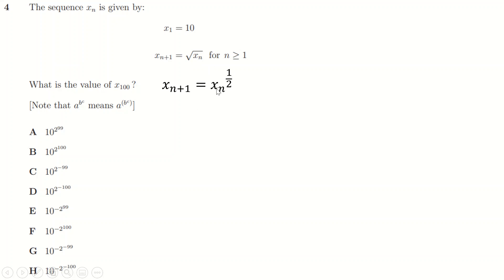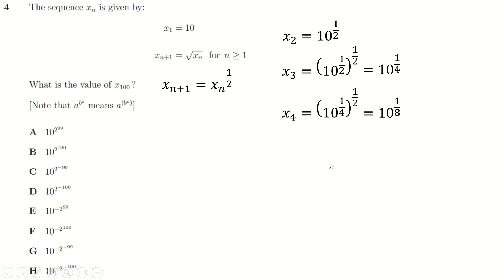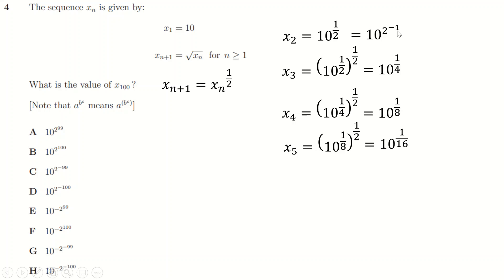Question four: I rewrite x₁ as 10^(1/2) since the answers involve powers. x₂ is √10 = 10^(1/2), x₃ is √(√10) = 10^(1/4), x₄ is 10^(1/4)^(1/2) = 10^(1/8), and x₅ is 10^(1/16). The exponents are 1/2, 1/4, 1/8, 1/16 — I can write 1/2 as 2^(-1) because two to the power minus one is a half. I initially wrote something wrong there — 2^(-1) is a half.